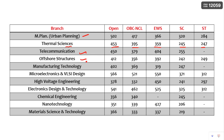Telecommunication, Offshore Structures, Manufacturing Technology, and Microelectronics and VLSI Design — also a top and highly demanded branch in ECE. You can see: Open 566, OBC non-creamy layer 521, EWS 550, SC 371. High Voltage Engineering, Electronics Design and Technology, Chemical Engineering, Nanotechnology, and Material Science and Technology — these are all the various branches. You can go through the cutoffs of each branch.